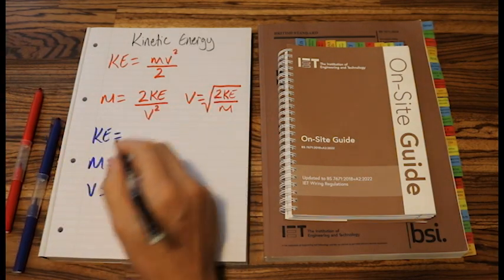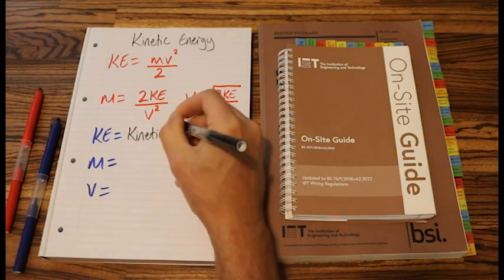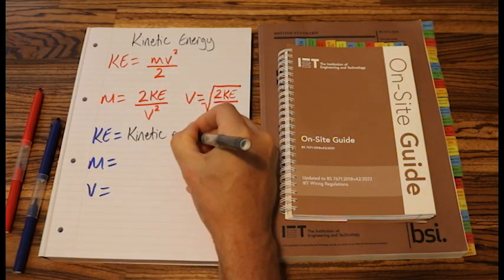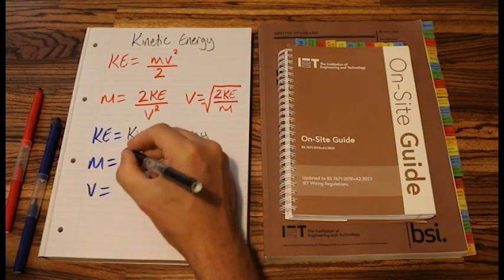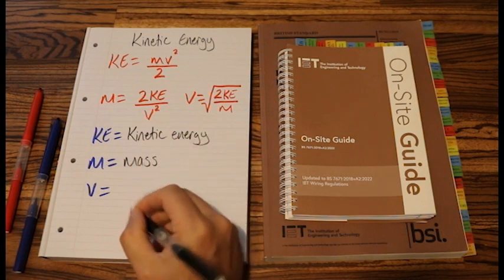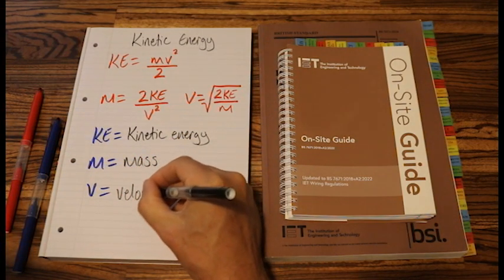And KE, yes it is the title, it is kinetic energy. Lowercase m is mass, lowercase v is velocity.